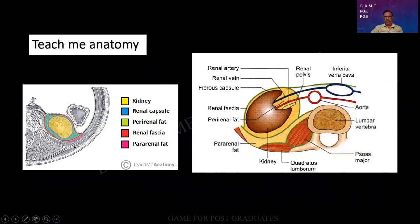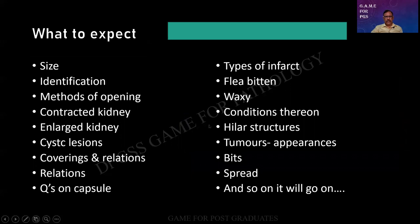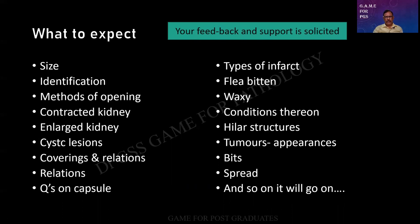This is what I have been mentioning about the relations — a beautiful picture. Kindly go through: what are all the structures, where is it located, where is the artery, vein, and what can we expect in the examination? Size, identification, contraction, enlargement, cystic relations, questions on the capsule, types of infarct, where do you get a waxy kidney, what are the hilar structures, what are the conditions where you get the flea-bitten kidney, appearances of tumors, from where will you give the bits, how does it spread. I hope you are a little familiar with the lesions. Your feedback and support is very much solicited.